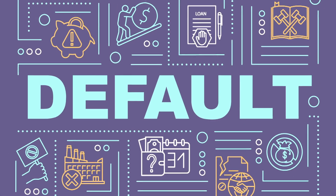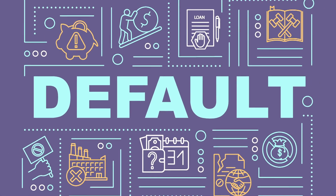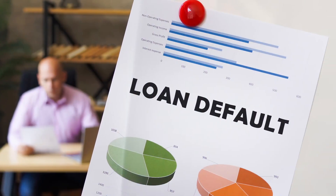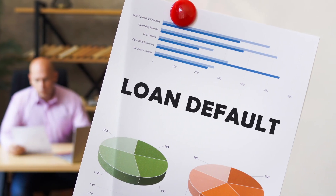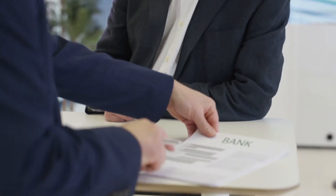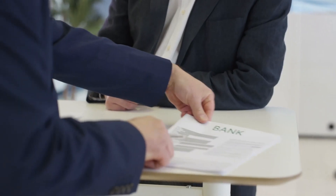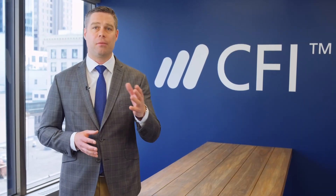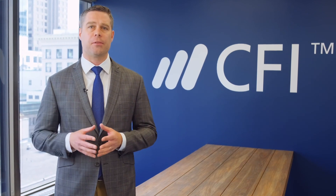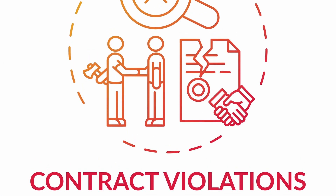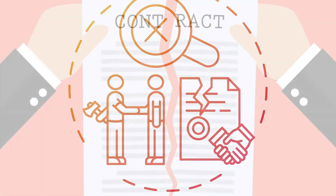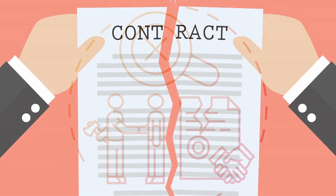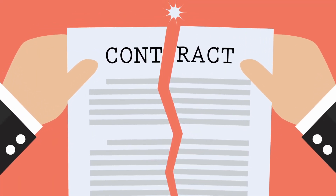The term default is often used in reference to a missed loan payment, either principal, interest, or both. A missed loan payment is actually a delinquency, which is one specific type of debt default. The word default does not itself mean missed payment. A default actually refers to the violation of any number of different terms or conditions outlined in the loan agreement made between a borrower and a lender.